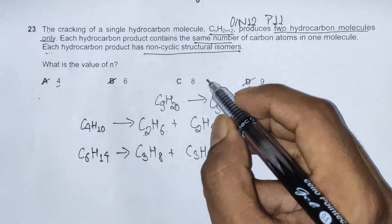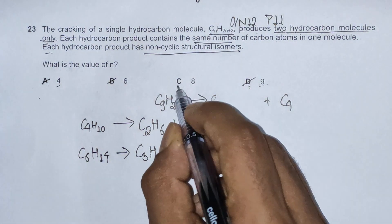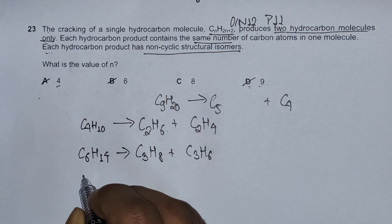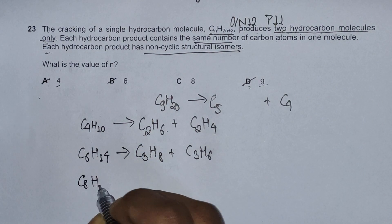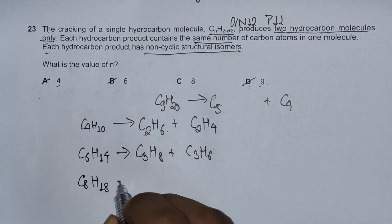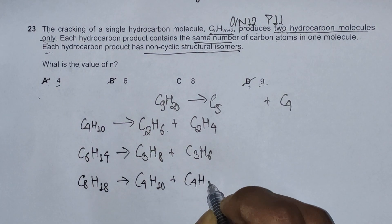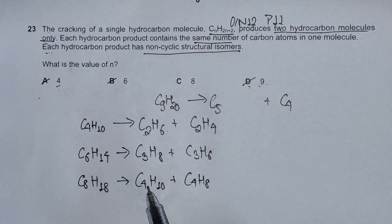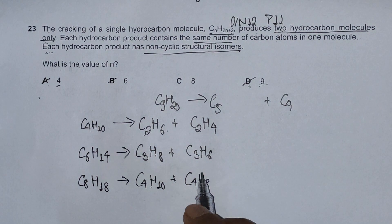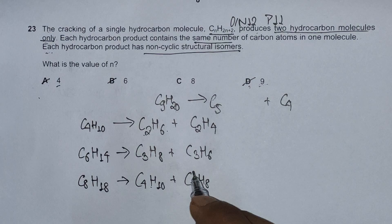By the process of elimination, we now know that C is the correct answer, but still we're going to check for it. C is C8H18. It should give us C4H10 plus C4H8. Now we need to see if we can find structural isomers of both of these products.